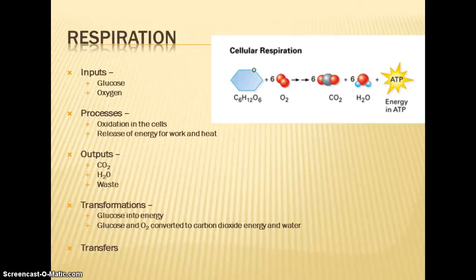The transformation: the glucose is turned into energy because the energy is stored in the carbon-carbon bonds of the glucose. And now that it's been broken apart, that energy is released and is used by the consumer. Glucose and oxygen have been converted into carbon dioxide, energy, and water. So the transfers that take place, once again, energy is our transfer. The chemical energy that was stored in the glucose has been transformed into kinetic energy, which is energy of motion. So that's the energy that's used for work, and then what has been degraded into heat.